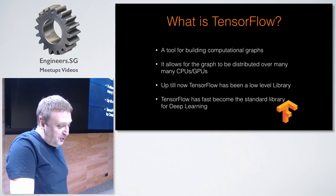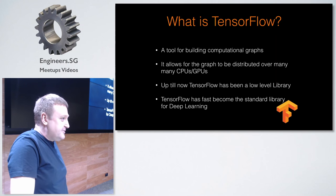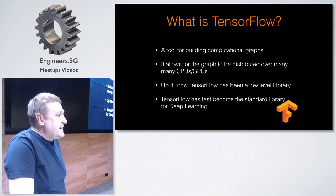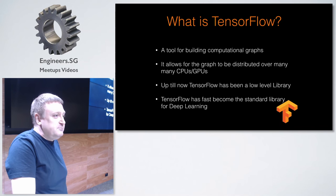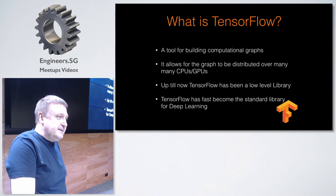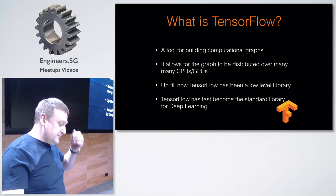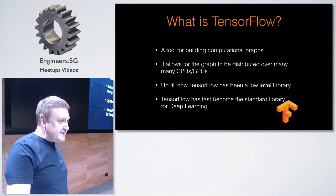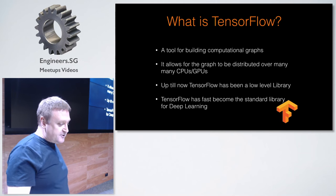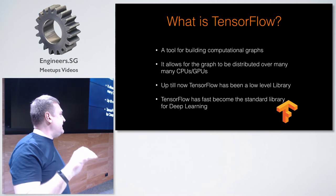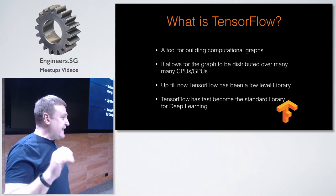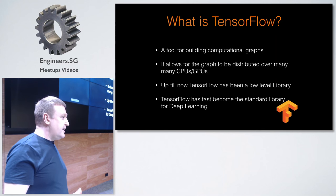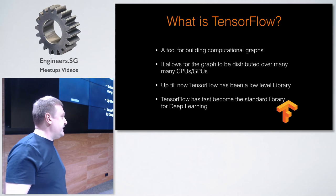TensorFlow is basically a tool for building computational graphs. Everyone talks about it as this deep learning tool, and it is that, but it can actually do a lot more than just pure deep learning. One of the things that makes it so special is it allows you to take this graph and distribute it over many CPUs or GPUs — 64 GPUs, 128 GPUs — allowing you to deal with extremely large datasets.